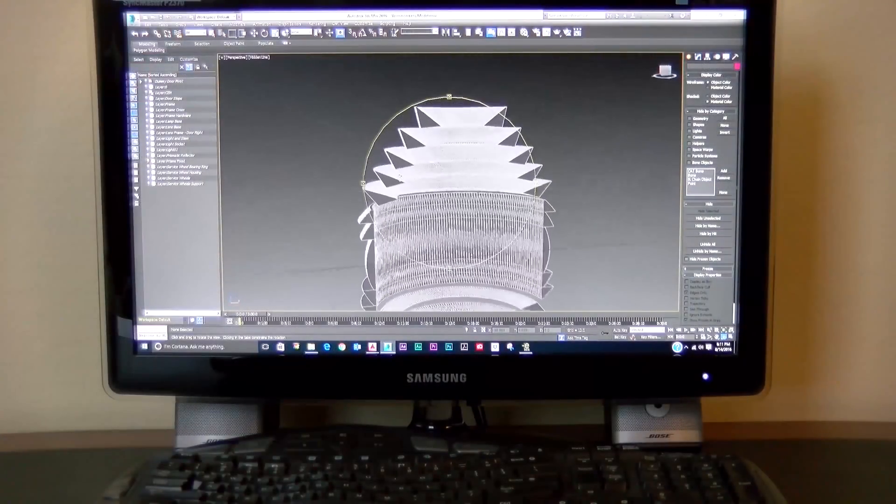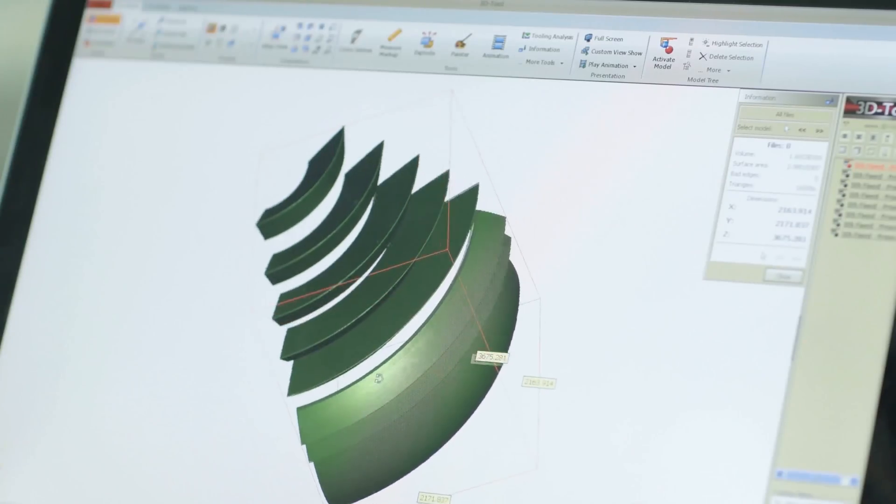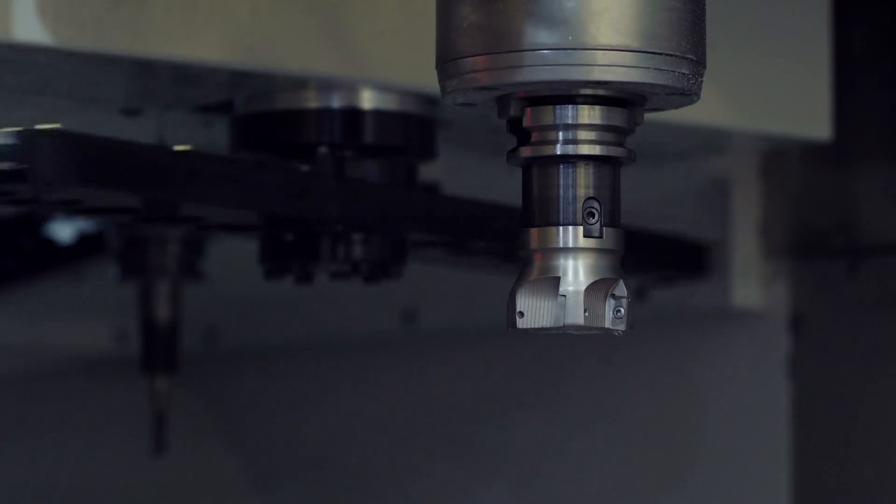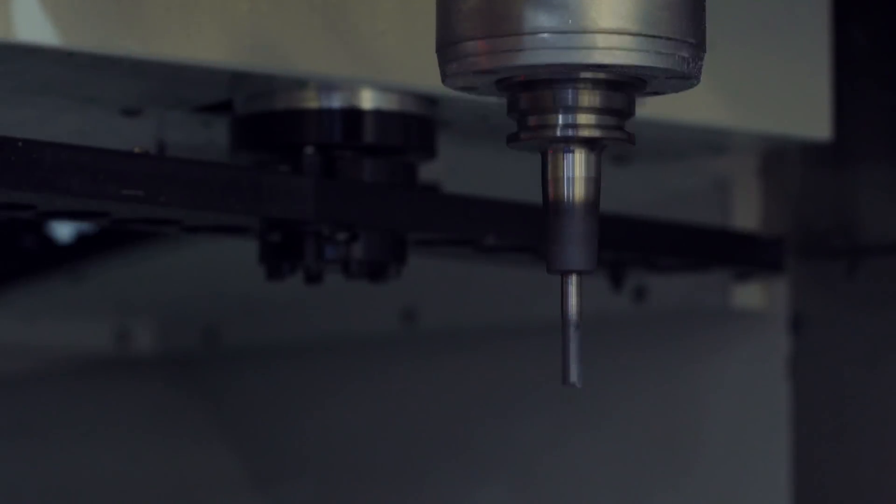Computer models of the prisms are now used for the machining process. CNC milling machines are used to rough out the shape of each prism.